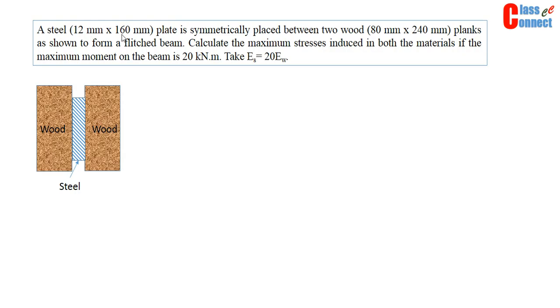A steel 12 mm x 160 mm plate is symmetrically placed between two wood 80 mm x 240 mm planks as shown to form a flitched beam. Calculate the maximum stress induced in both the materials if the maximum moment on the beam is 20 kNm.